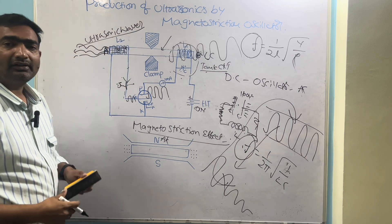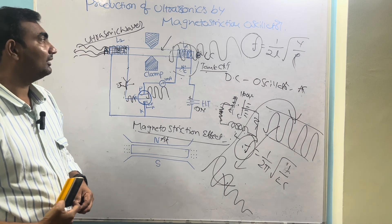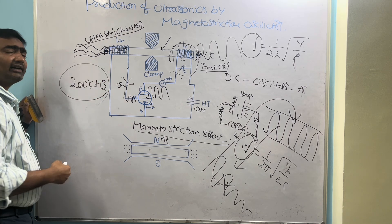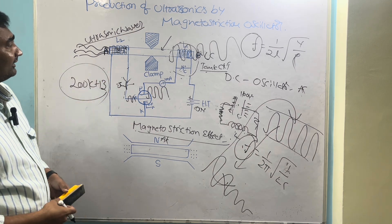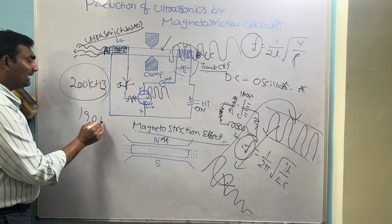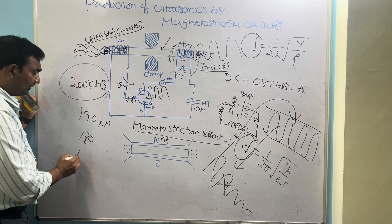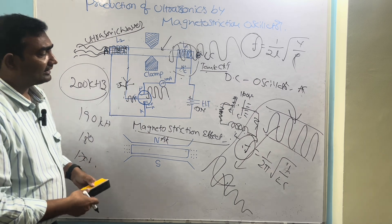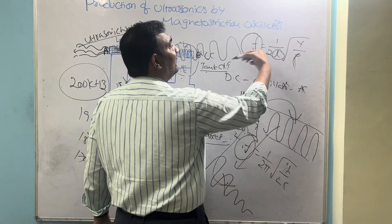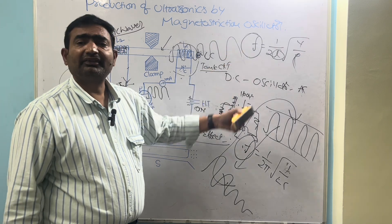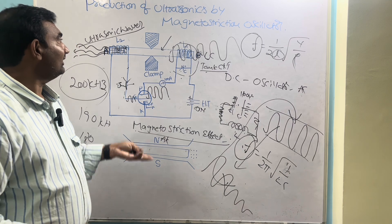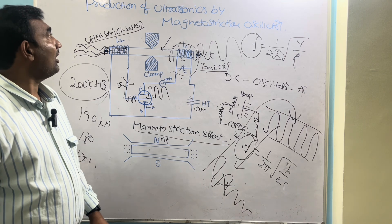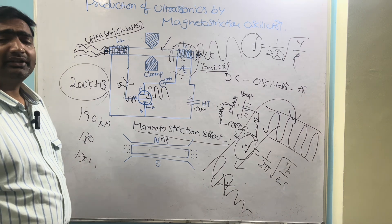This is the operation of the magnetostriction oscillator. By this method, we can produce ultrasonic waves up to 200 kilohertz. If you want to produce a specific frequency — say 190 kHz, 180 kHz, or 170 kHz — you can change the length of the rod. As the rod length changes, its natural frequency changes, allowing you to produce a desired frequency of ultrasonics. This is the way to produce ultrasonic waves using a magnetostriction oscillator.